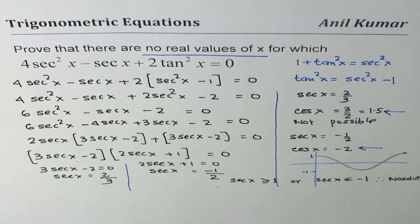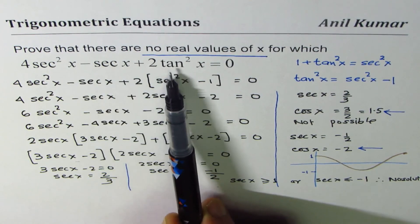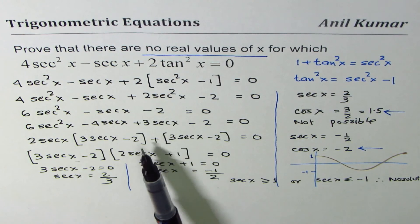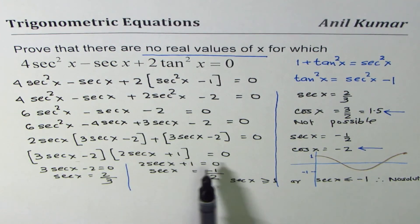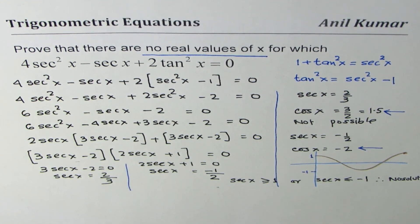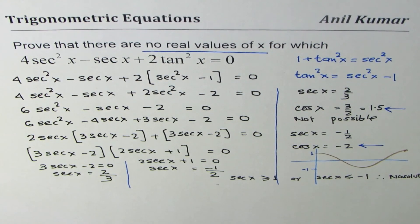So that is how you solve this question on trigonometric equations. The strategy was to write the quadratic equation in terms of secant, factor it, equate factors to zero to find possible values, but the values obtained cannot be achieved by secant — therefore this equation has no real solution. I'm Anil Kumar; if you have any difficulties you can always post your queries. Thank you and all the best.